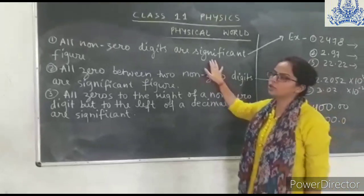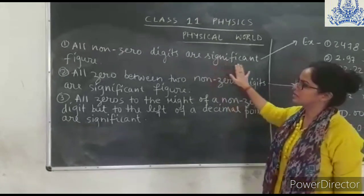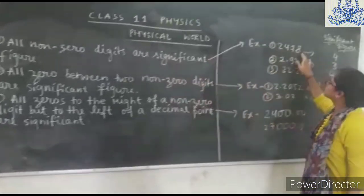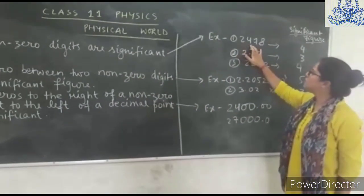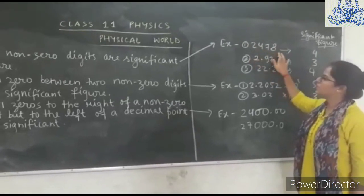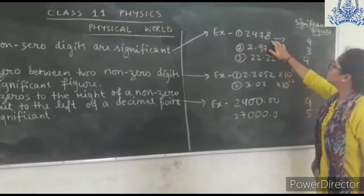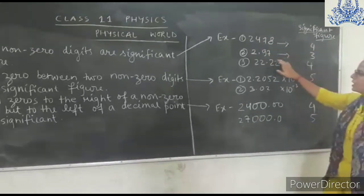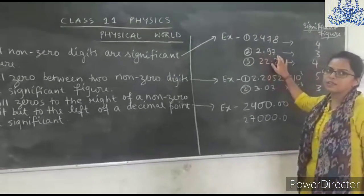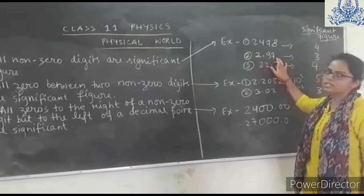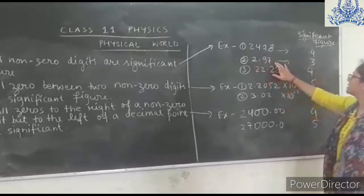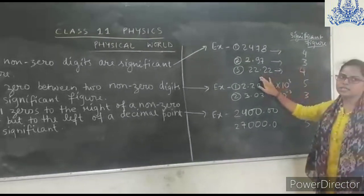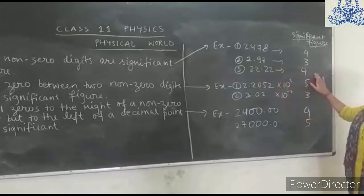Now we will study some of the rules of Significant Figures. Rule 1: All non-zero digits are significant figures. For example, in 2, 4, 7, 8 — these four non-zero digits give four significant figures. In 2.97, there are three non-zero digits, so there are three significant figures. Similarly, the next example has four significant figures.